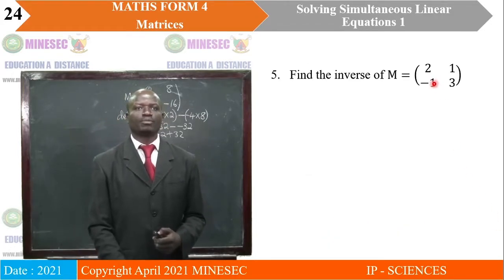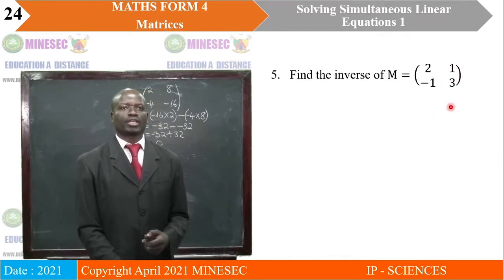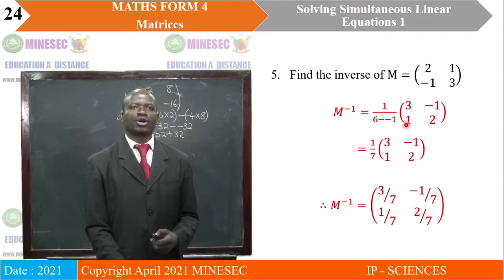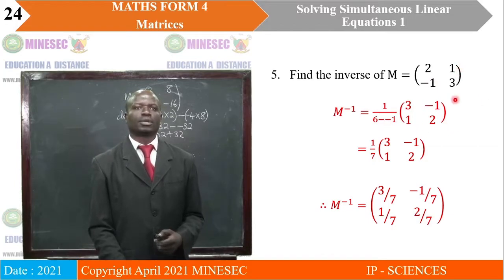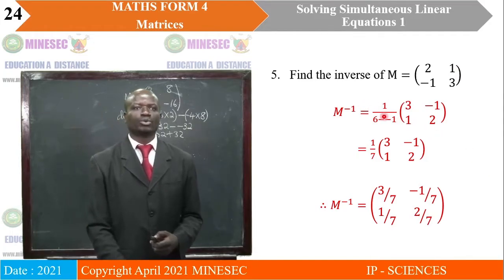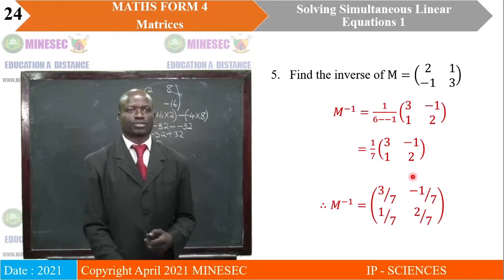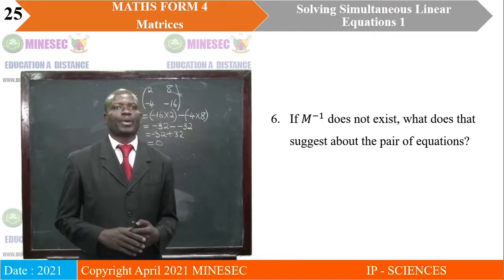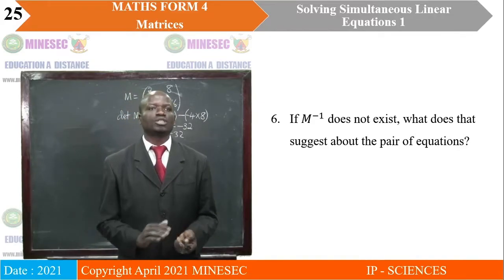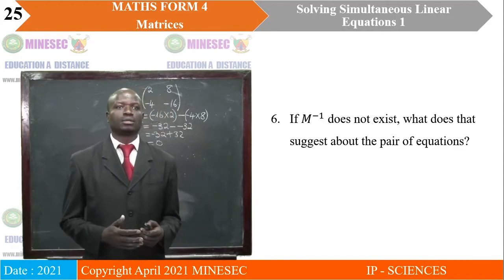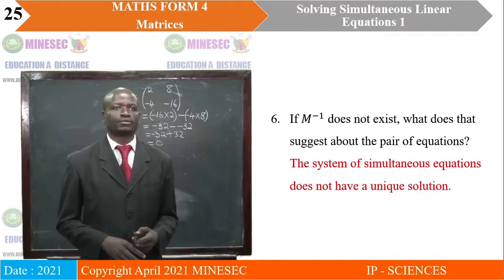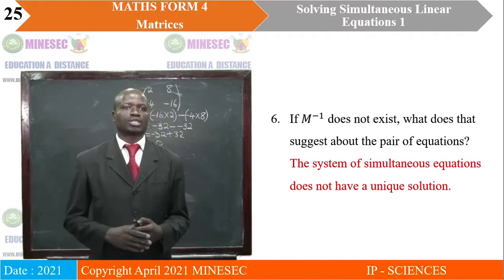Find the inverse of M, where M is [2, 1; -1, 3]. The inverse is 1 divided by the determinant, which is 2 times 3 = 6 minus (-1 times 1) = -1, into the adjoint. We've swapped the main diagonal elements and changed the signs of the other entries. When we simplify, we have 1 over 7 times the adjoint. If M inverse does not exist, it means the matrix of coefficients has determinant 0, and the system of equations has no unique solution.